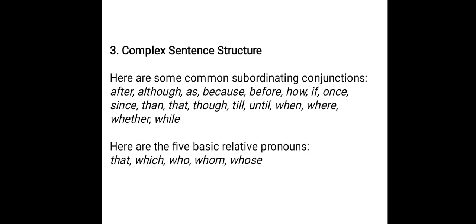Common subordinating conjunctions include: after, although, as, because, before, how, if, once, since, then, that, though, till, until, when, where, whether, and while. The five basic relative pronouns are: that, which, who, whom, and whose. Coordinating conjunctions join independent clauses, while subordinating conjunctions connect dependent clauses to independent clauses.